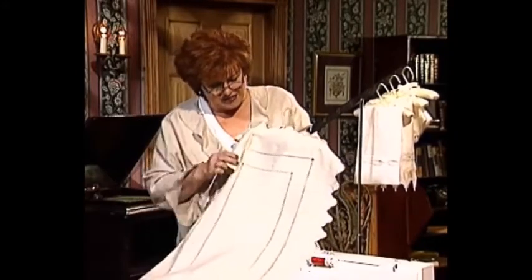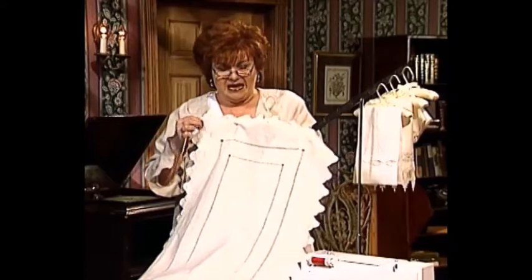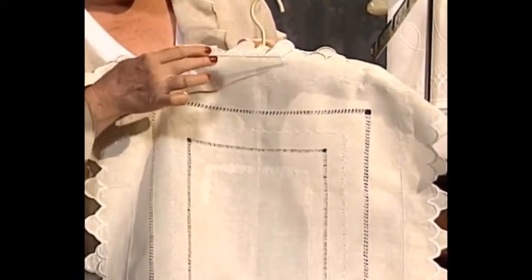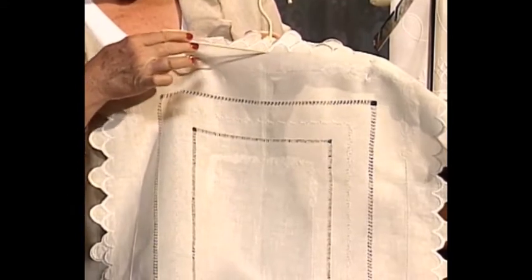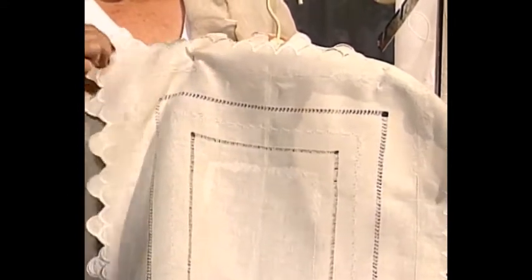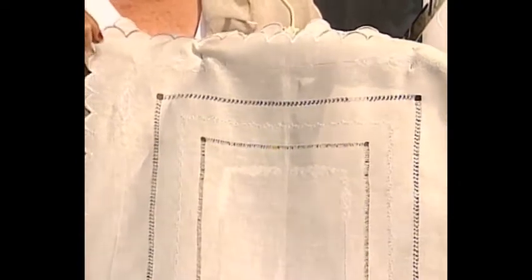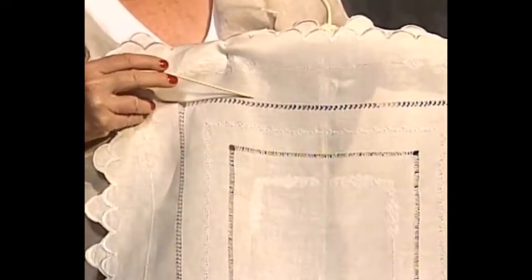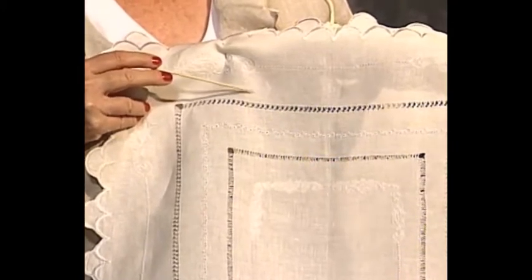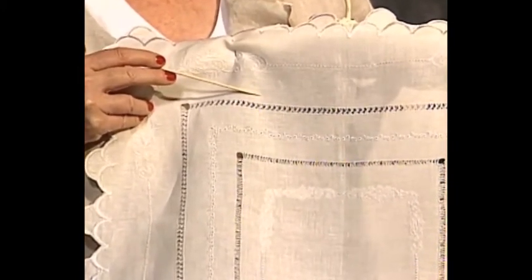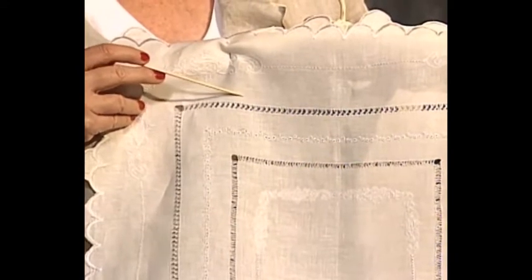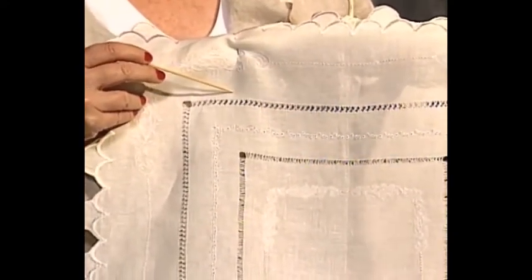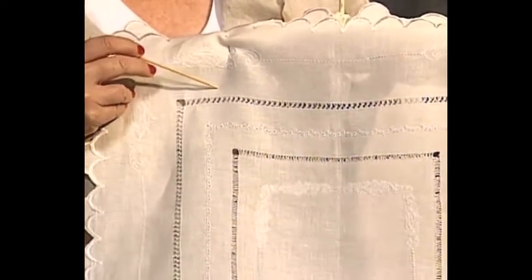This is one of the most interesting table runners that I have ever seen. It has the most magnificent scallops that run all the way around the edge. Isn't that pretty how they go in and out? Now the main feature I want you to look at on this table runner, there are two types of machine drawn work. Drawn thread work takes eons to do by hand, but not so by machine. As a matter of fact, this project was taught at our school and the whole project was finished in one day.